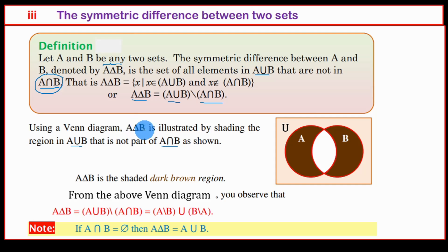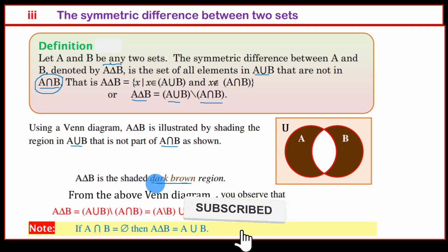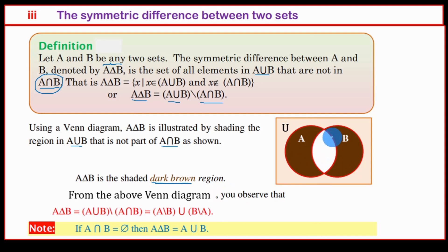The symmetric difference between set A and set B, equal to A delta B, is shaded dark brown in the Venn diagram. From the Venn diagram, you can observe that A delta B equals A union B less A intersection B.